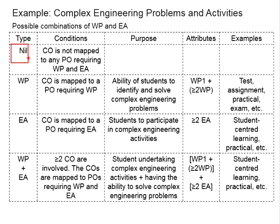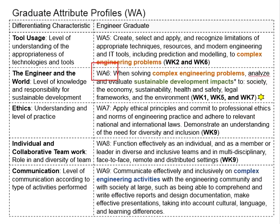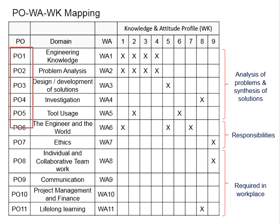When you have none of them, that means none of the course outcomes is actually mapped to any program outcome requiring complex engineering problems or complex engineering activities. For complex engineering problems, you will have WA1 to WA6. You will need to refer to your program outcomes which are meant to address WA1 to WA6. If any of the course outcomes attend to the respective program outcomes, then you will know that you need to incorporate the complex engineering problems.